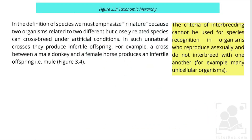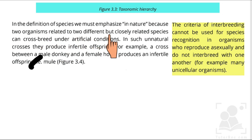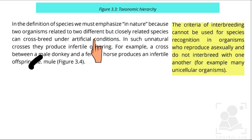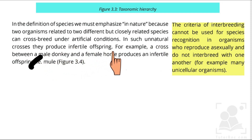In the definition of species, we must emphasize 'in nature,' because two organisms related to two different but closely related species can crossbreed under artificial conditions. The main emphasis in the species concept is on natural interbreeding. However, some unnatural crosses produce infertile offspring.